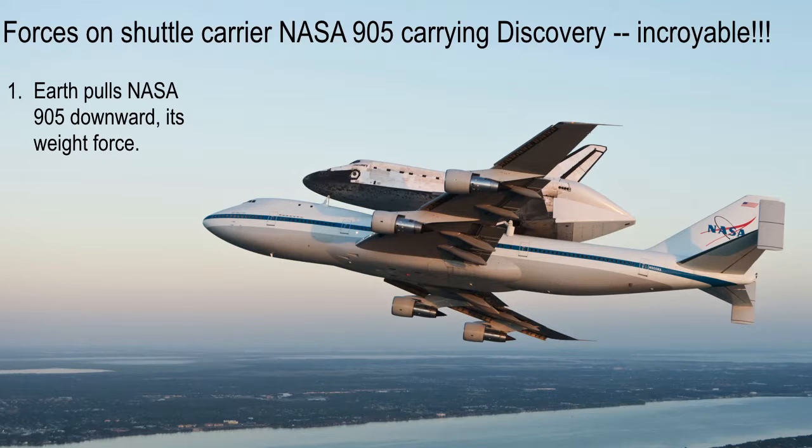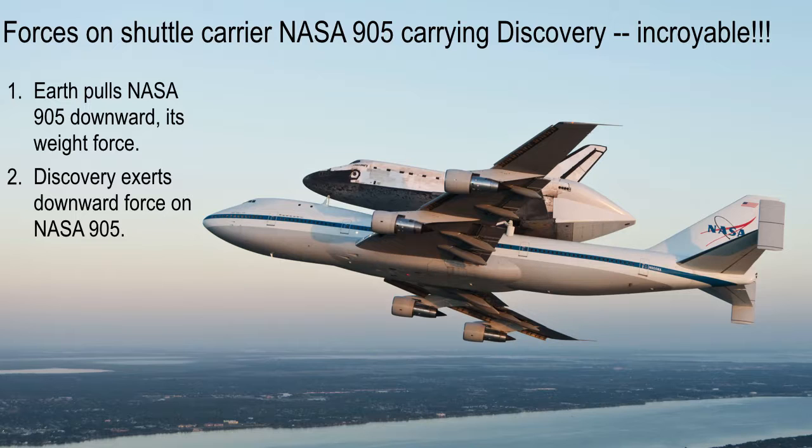It's incredible if you think about the forces acting on this big 747. First of all, it is experiencing the pull of the Earth, so it has a downward weight force. The mass of the shuttle carrier is approximately 300 metric tons. The space shuttle also has a weight, about 80 tons mass, so it's going to exert some downward weight force on NASA 905.